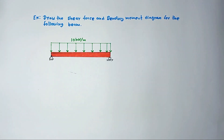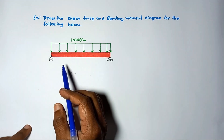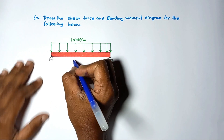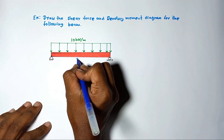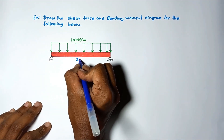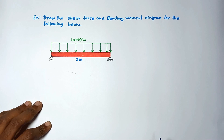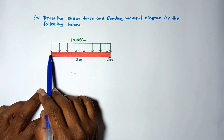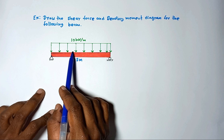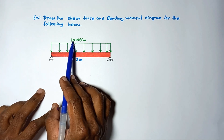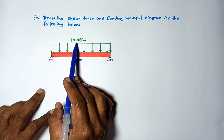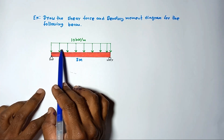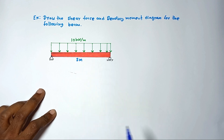In this problem, draw the shear force and bending moment diagram for the following beam. The beam length is equal to 3 meters. The uniformly distributed load has an intensity of 10 kilonewtons per meter, and it is acting throughout the entire length of the beam.